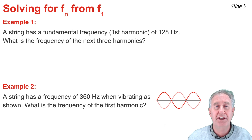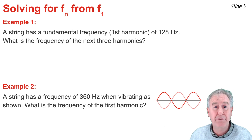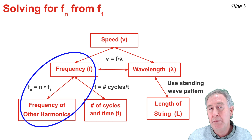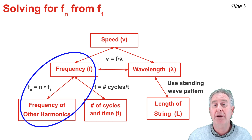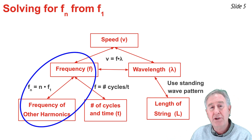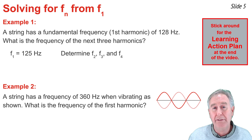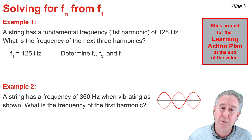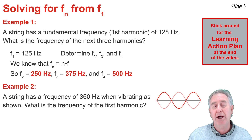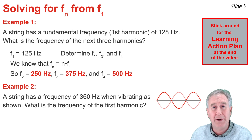In Example 1, a string has a fundamental frequency of 128 Hz; I want the frequency of the next three harmonics (2nd, 3rd, and 4th). Using fₙ = n × f₁ with f₁ = 125 Hz, I multiply by 2, 3, and 4 to get f₂, f₃, and f₄. In Example 2, a string vibrates at 360 Hz in a pattern I recognize as the third harmonic. Using f₃ = 3 × f₁, I divide 360 Hz by 3 to get f₁ = 120 Hz.